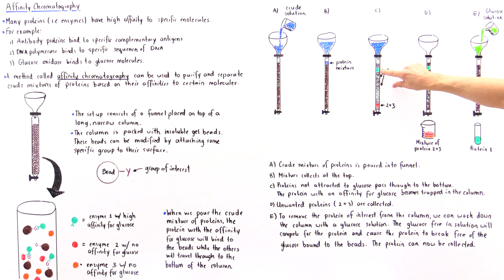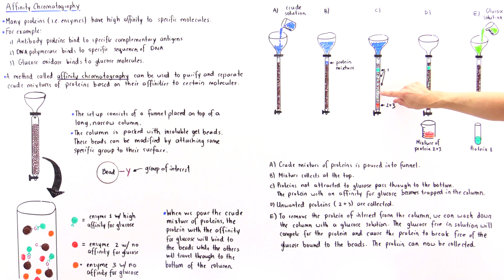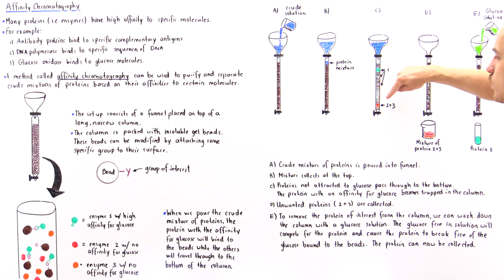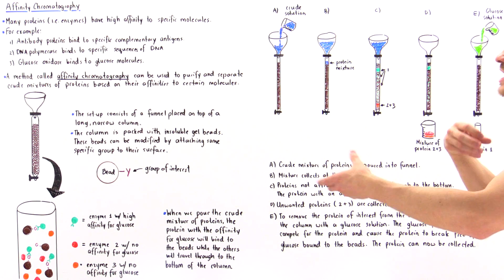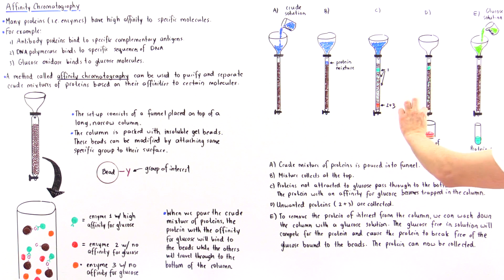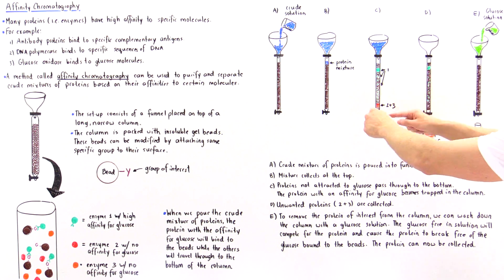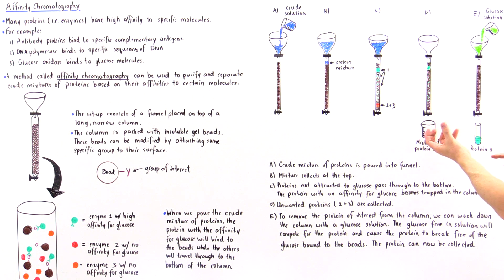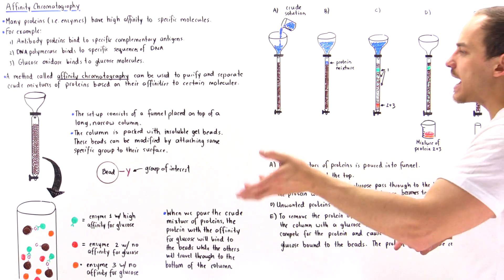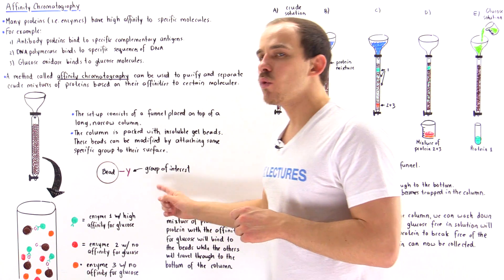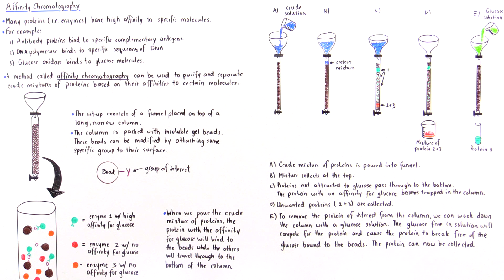Enzyme one is bound throughout the beads in the column, while enzymes two and three don't bind to any of the beads and simply move all the way to the bottom. In step four, we open the valve, allowing enzymes two and three — which we did not want to isolate — to flow out and be collected into a separate beaker, which we then discard. Our focus was to isolate protein one, not proteins two or three.